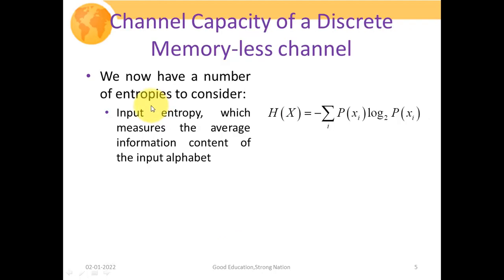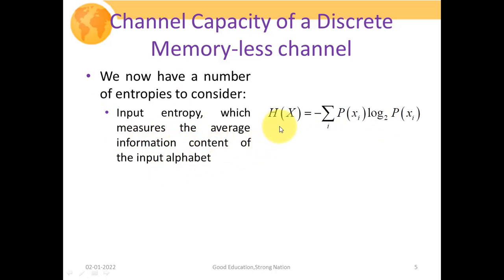To calculate the channel capacity of a discrete memoryless channel, we need to consider a number of entropies. First, the input entropy H(X), given as: H(X) = −∑_i P(Xi) log₂ P(Xi), where P(Xi) is the probability of occurrence of symbol Xi, and the source is capable of generating I symbols. The input entropy measures the average information content of the input alphabet.